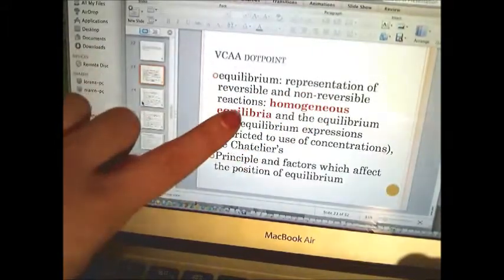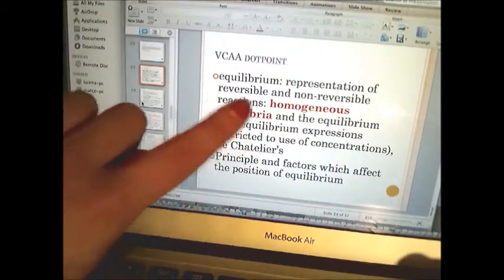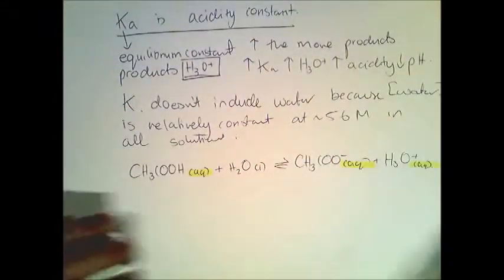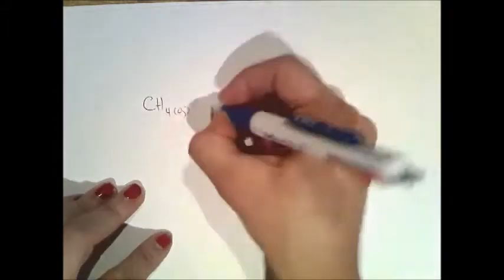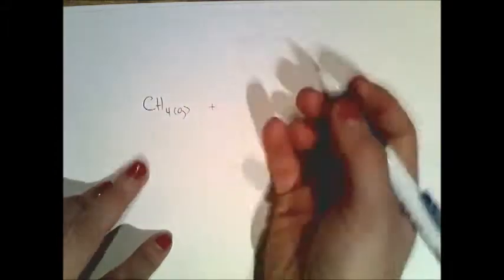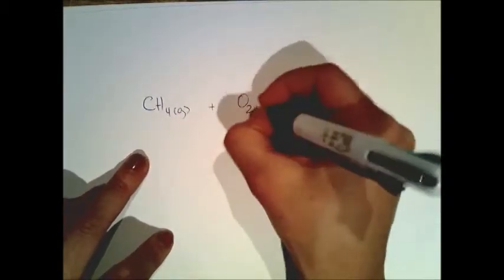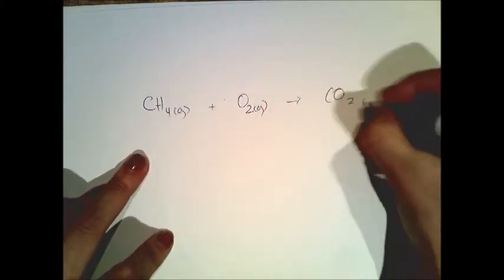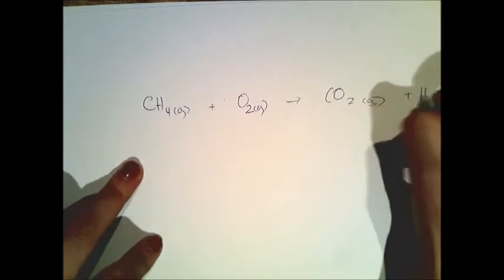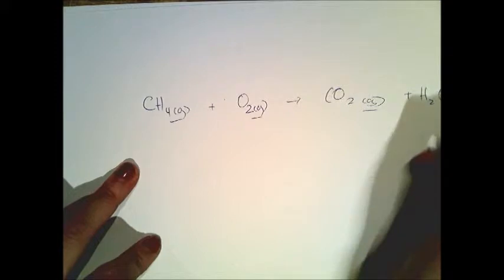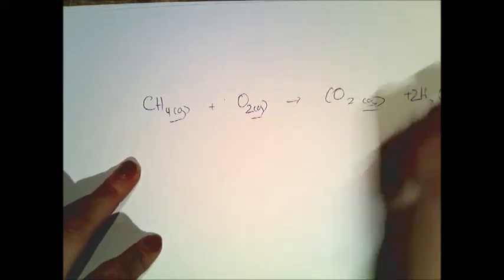The VCAR dot point says equilibrium expressions should only be written for homogeneous equilibria — in the same state — so water in a different state is excluded. However, this is not to say you can never include water. For example, in the combustion of methane where water is a gas, it would be a homogeneous equilibrium and you'd have to include water in your K expression.